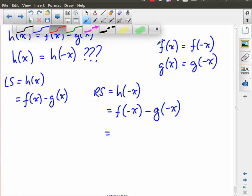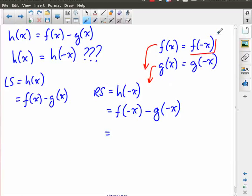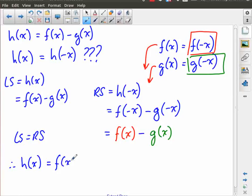But now that I've done that, I can start to incorporate these definitions, because I have an f of negative x here, but I also have an f of negative x here. And it turns out that f of negative x is actually the same as f of x minus g of negative x, which is what I have right here, is the same as g of x. So I can replace that with g of x. And without too much trouble, you can see that I have actually shown that left side is equal to right side, f of x minus g of x, f of x minus g of x. Therefore,